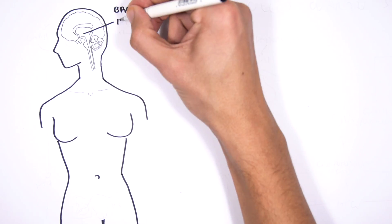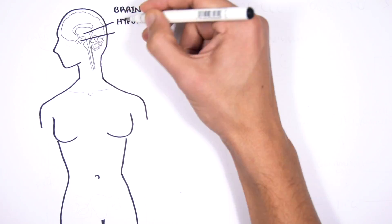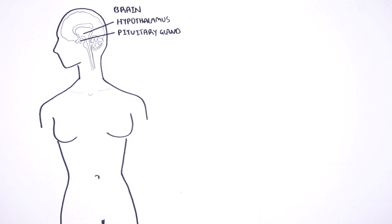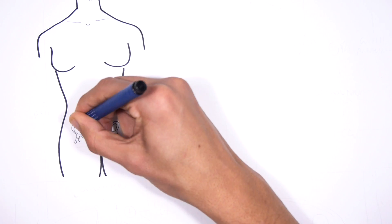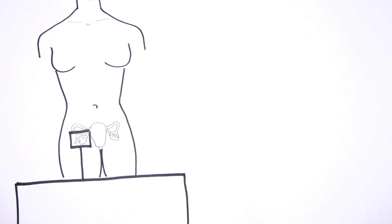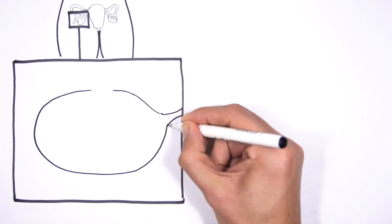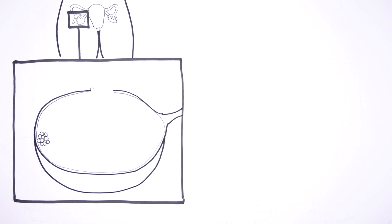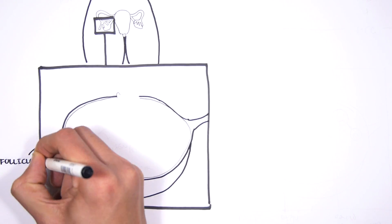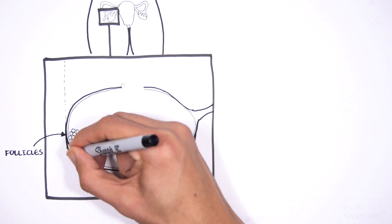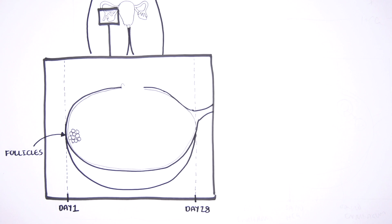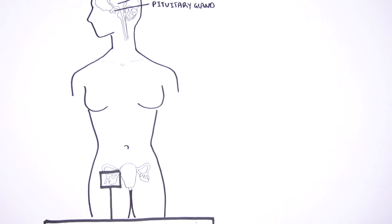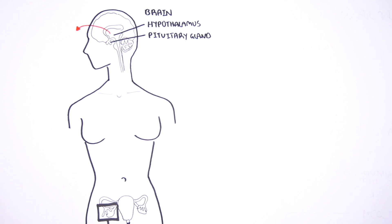Here is the brain, and two important parts of the brain involved in the menstrual cycle are the hypothalamus and the pituitary gland. Here is the lower female tract. We are zooming into the right ovary. A woman of reproductive age has many follicles within each ovary, ready to develop each month. The menstrual cycle is typically 28 days in duration. At day 1, it begins with the release of gonadotropin-releasing hormone, or GnRH for short, from the hypothalamus.